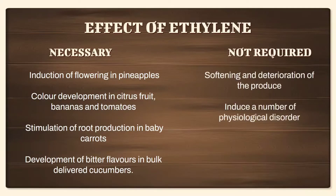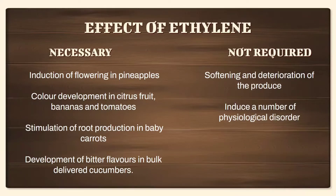However, in most horticulture situations it is desirable to remove ethylene or suppress its negative effects — such as softening and deterioration of produce. If there is a greater release of ethylene, the fruit's shelf life is reduced because the maturity and ripening process is accelerated, causing softening and deterioration much sooner. Ethylene also induces a number of physiological disorders, which is why we use ethylene scavengers.